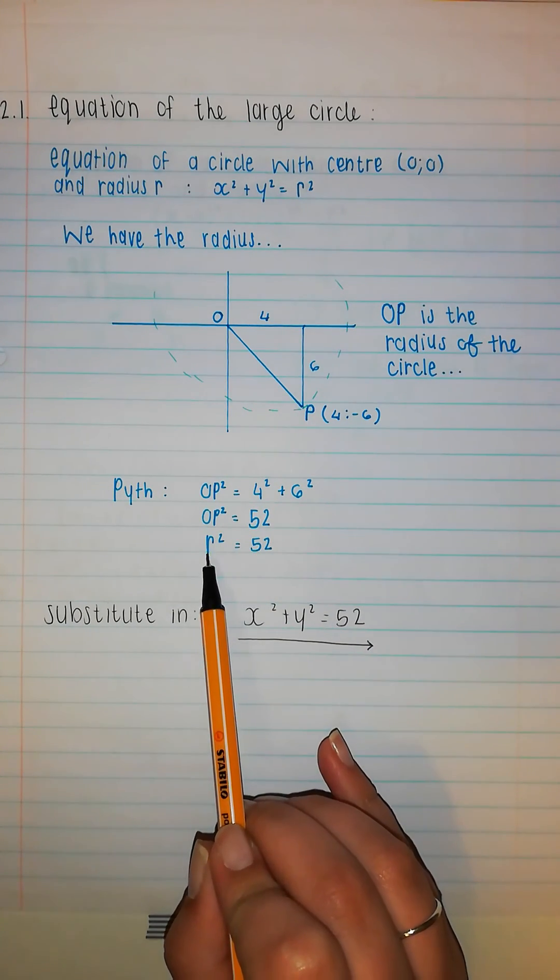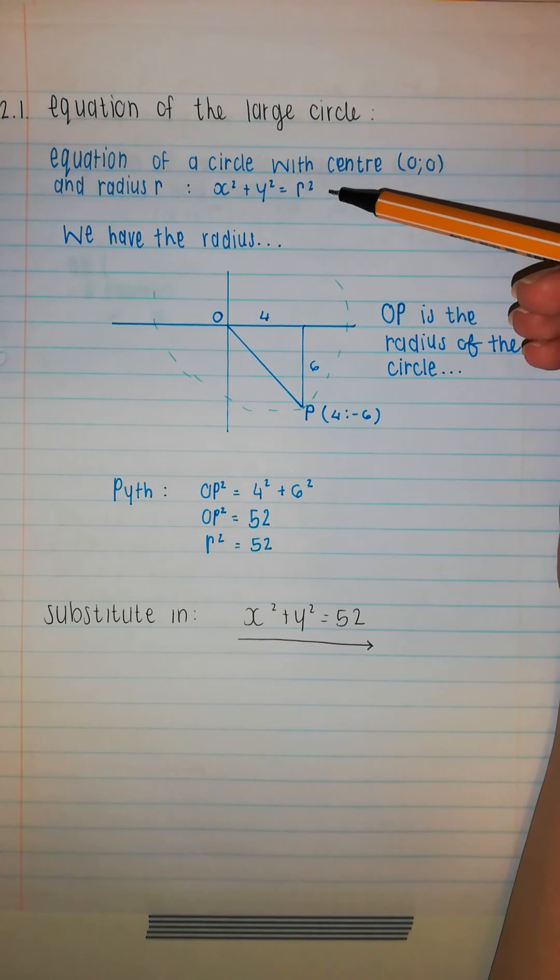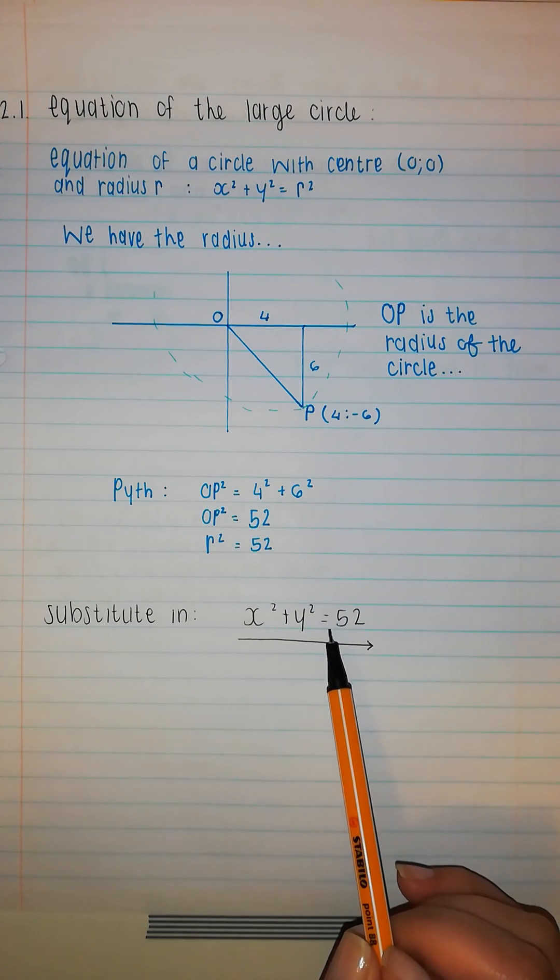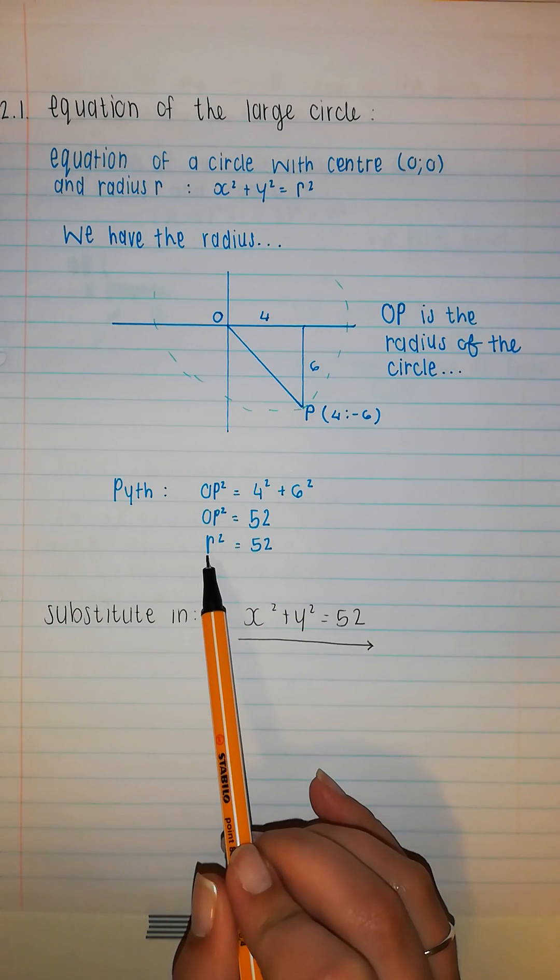Now we need this radius squared for this formula, and then we're just going to substitute it in, saying x squared plus y squared equals 52 because it's the radius squared.